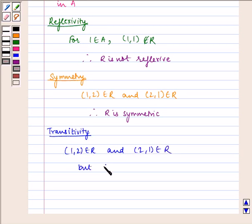But (1,1) ∉ R. Therefore, R is not transitive.